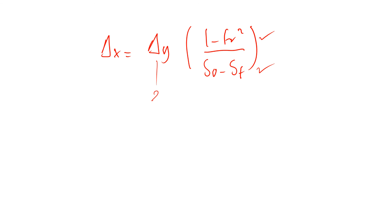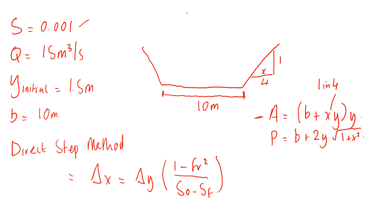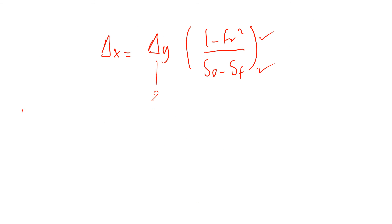However, what do we use here? In the question it tells you. It says start at 1.5, carry out one step integration to give how far upstream the depth has reduced to 1.4. So you're going from 1.5 to 1.4. Δy equals 1.5 minus 1.4 equals 0.1. In this sense it will be negative 0.1 because you're going upstream, so you're integrating backwards.